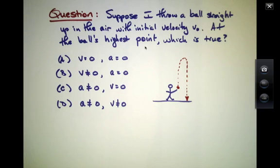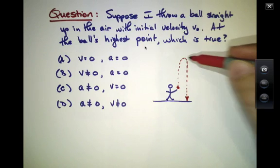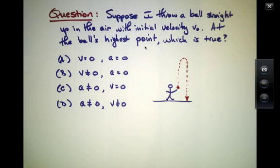We have four choices. One is that both the velocity and the acceleration are zero at this point. The second is that the velocity is not zero, but the acceleration is zero. The third is that the acceleration is not zero, but the velocity is zero. And the fourth is that the acceleration is not zero and the velocity is not zero.